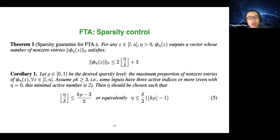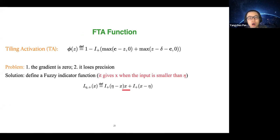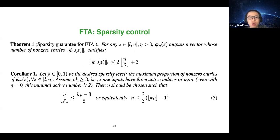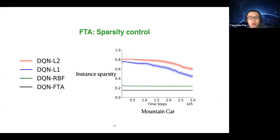Corollary 1 tells us how to choose eta — the parameter that allows backpropagation by enabling non-zero gradients and controls sparsity. Given a desired sparsity level (number of non-zero entries), Corollary 1 gives the required eta value. Here is an example learning curve of instance sparsity — the proportion of non-zero entries versus training time steps — on the Mountain Car domain. DQN-FTA's sparsity is almost constant across training steps, whereas for L1 or L2 regularization, sparsity decreases over time.